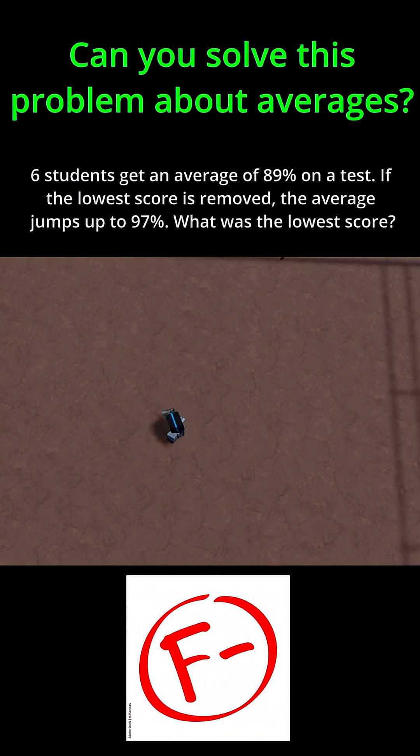To solve this problem, I'm first going to do 6 times 89%. Why am I doing that? Well, if I do 6 times 89%, you can imagine that each student is almost as if each student got an 89 on the test, and you can add 89 six times to get the total score on the test.